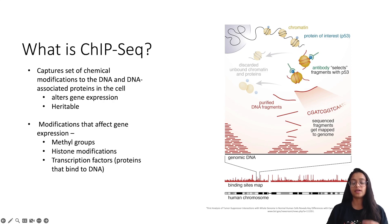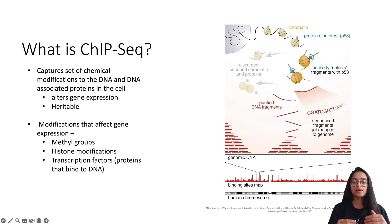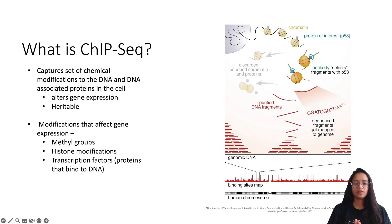This technique has been used by scientists to identify where p53, an important tumor suppressor protein, binds across the entire genome in normal human cells. After the protein is cross-linked to the DNA, the cells were split open and a specific antibody was used to isolate chromatin fragments containing the bound protein. After purifying the DNA fragments, high-throughput sequencing and computational methods mapped millions of sequence fragments to the genome, revealing that p53 had differential binding patterns in normal versus cancer cells.